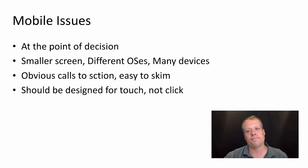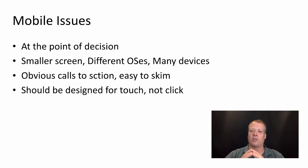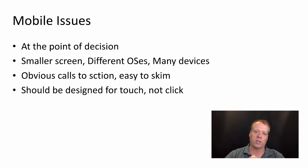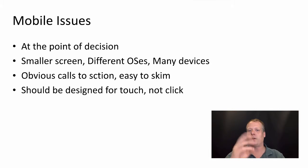Mobile is great because it exists at the point of decision — if someone is trying to decide whether to make a purchase in a particular store, they can research it right there. However, mobile has a smaller screen, many different operating systems, and many different devices. To compensate, you need obvious calls to action, content that's easy to skim, and design optimized for touch rather than click — meaning bigger graphics and more white space.